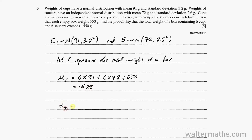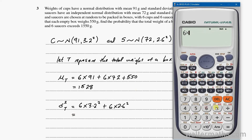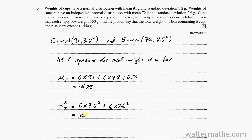For the variance of T, that's 6 times the variance for cups, which is 3.2 squared, plus 6 times the variance for saucers, which is 2.6 squared. The 550 is a constant, so we do not include it in the computation of variance. That's 6 times 3.2 squared plus 6 times 2.6 squared, and this gives us 102.